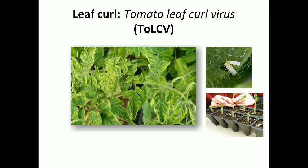Next disease is leaf curl, caused by Tomato Leaf Curl Virus. The vector is the whitefly Bemisia tabaci. Symptoms include downward rolling and crinkling of leaves; older leaves appear leathery, brittle, and bushy. Transmission occurs by grafting and through the whitefly vector.